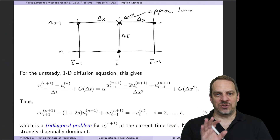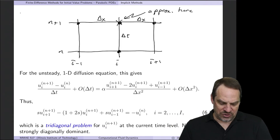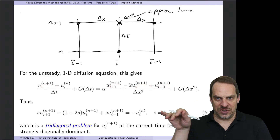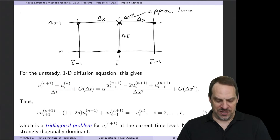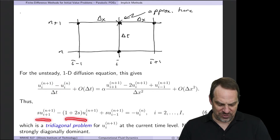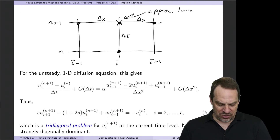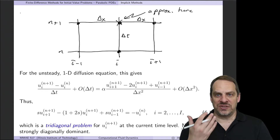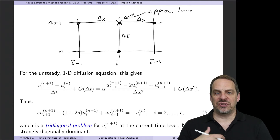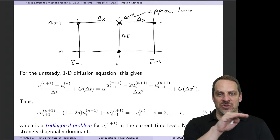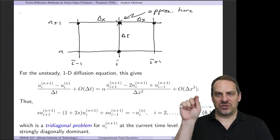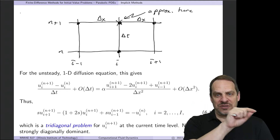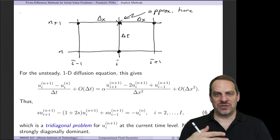Let's take the unknowns and pull them to the left side, and all the knowns to the right side of the equation. The n plus 1 terms are all unknown, so we take those to the left, and the only known is u_i^n. We have three terms on the left-hand side corresponding to u_{i+1}, u_i, and u_{i-1}, and only one term on the right-hand side.